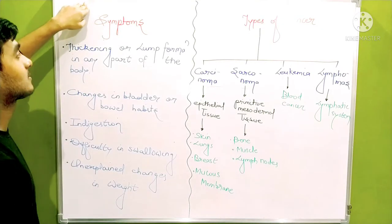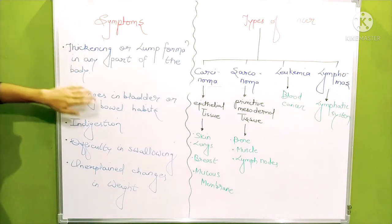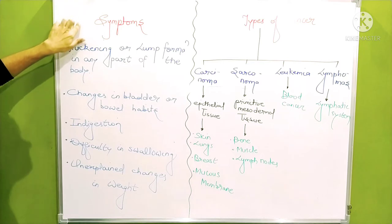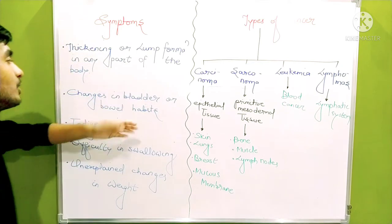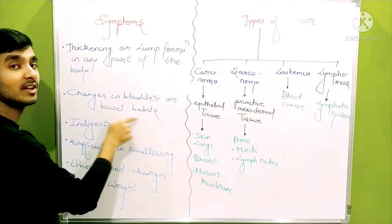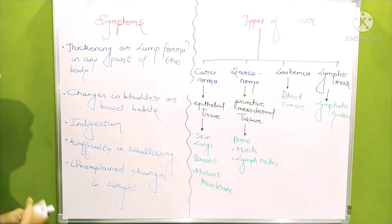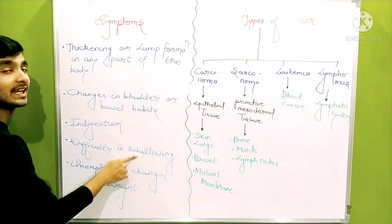Now let's go across the symptoms. First symptom is thickening or lump formation in any part of the body. When uncontrolled division of cells occurs, it will result in formation of a lump at that particular region. Second is change in bladder activities - bowel habits means the habit of secretion got changed. Then indigestion - difficulty in digestion of food. Next is difficulty in swallowing.